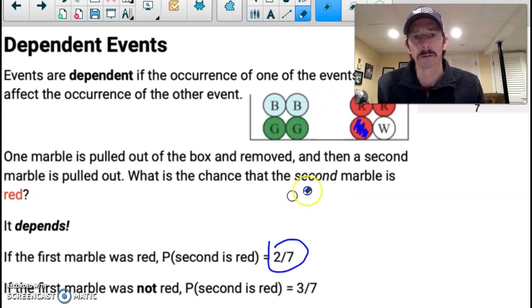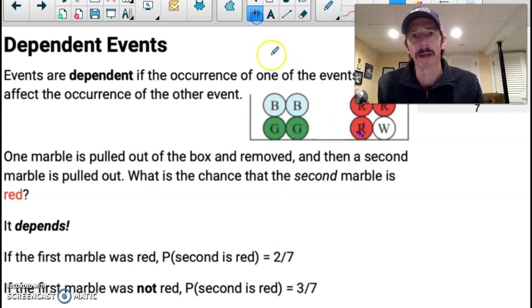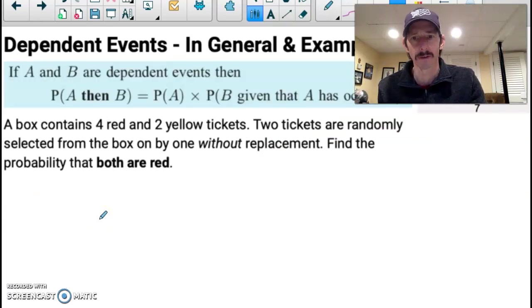Now, let me erase that situation because the reason it depends is if the first one wasn't red, that means it was one of these other colors. So one of these other marbles, I don't know which one, is gone, so there's still only seven marbles in there, but because I didn't pick a red one the first time, there's still three red marbles left to pick. So it depends on what the first marble was selected, and therefore that is called a dependent event.